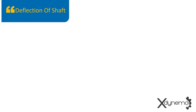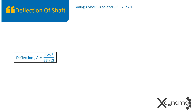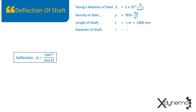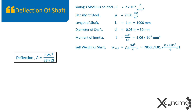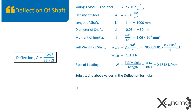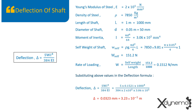The amount by which the shaft deflects under its self-weight is given by delta equal to 5WL⁴ / 384EI. Here is the data from the problem statement: Young's modulus of steel is 2×10⁵ N/mm², density of steel is 7850 kg/m³, length of shaft is 1 meter, diameter of shaft is 50 mm. Self-weight of the shaft equals rho × g × volume, which equals rho × g × (π/4) × D² × L. The weight of the shaft is 151.2 Newtons. The rate of loading is the ratio of self-weight to total length of shaft, which equals 0.1512 N/mm. Substituting the above values in the deflection formula, the maximum deflection is obtained as 0.0323 mm.